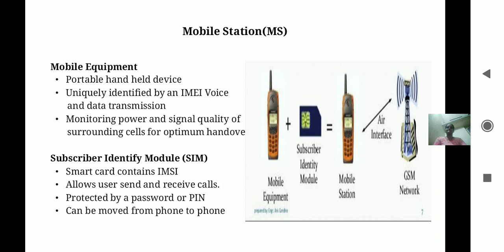Let's see the mobile equipment. Mobile equipment is a portable device uniquely identified by an IMEI, used for voice and data transmission. It also monitors power and signal quality of surrounding cells for optimum handover.